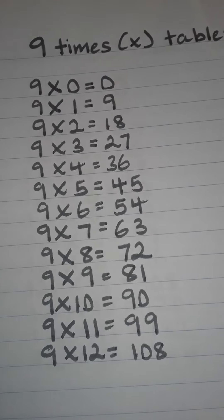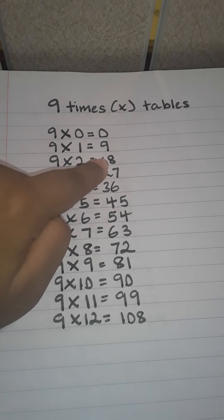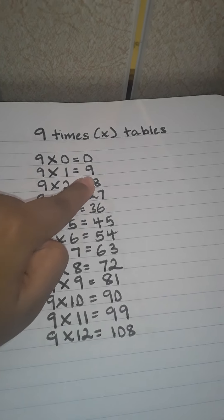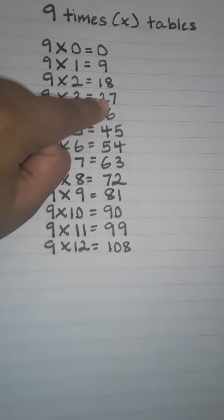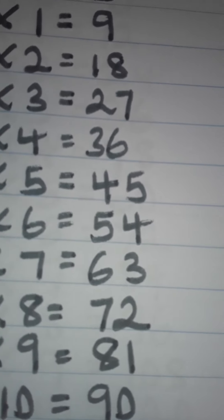Once you know that 9 times 1 is 9, it becomes super easy. All you have to do is just keep on subtracting 1. So, 9 subtract 1 is 8, 8 subtract 1 is 7, 7 subtract 1 is 6, 6 subtract 1 is 5.